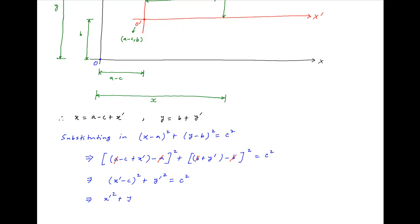This can be written as X'² + Y'² - 2CX' + C² = C².